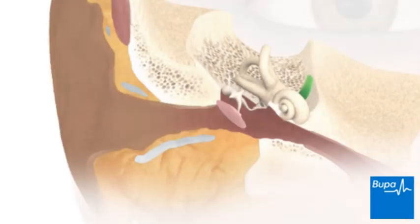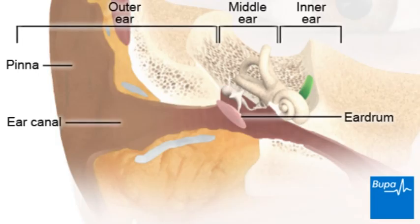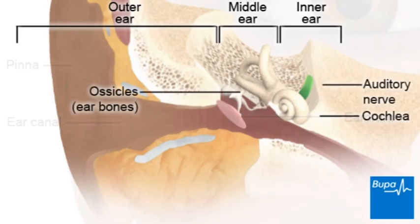Your ear consists of three parts: the outer ear, the middle ear, and the inner ear. These all work together to pass sound through your ear and to your brain.